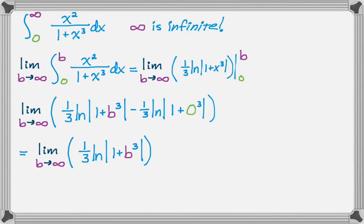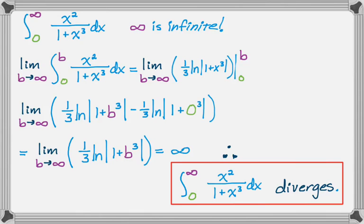Now, if you think of a graph of natural log, it increases forever. So if B is going to infinity, 1 plus B cubed is going to infinity, the natural log of infinity definitely does not converge on anything. So this diverges. So we would say that the integral diverges. It doesn't have a finite sum. So that's how we would do this.